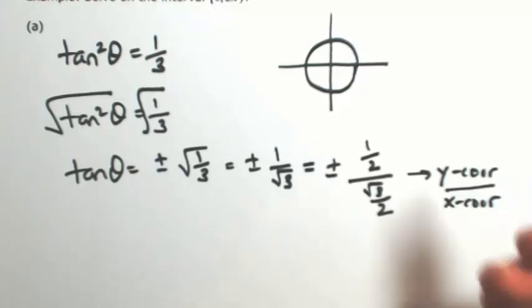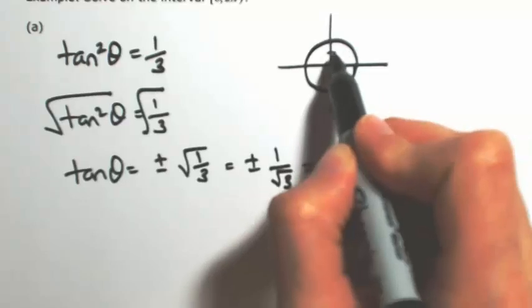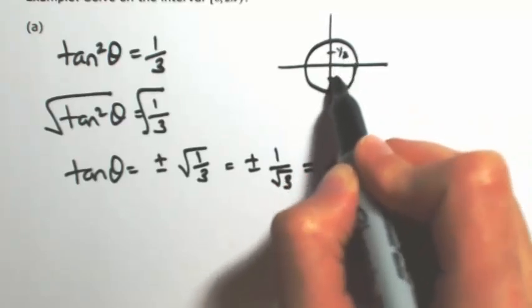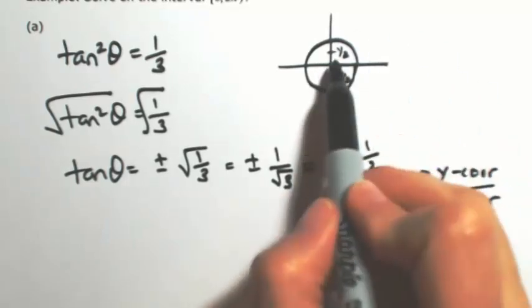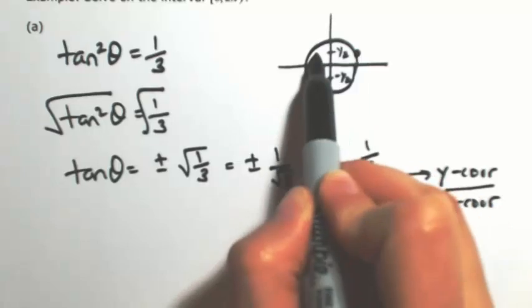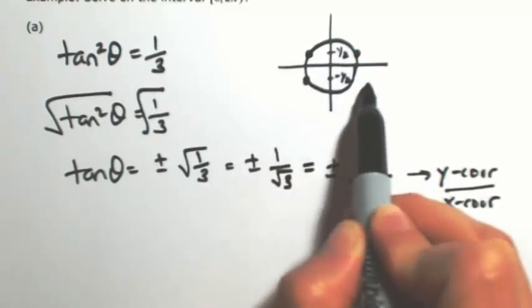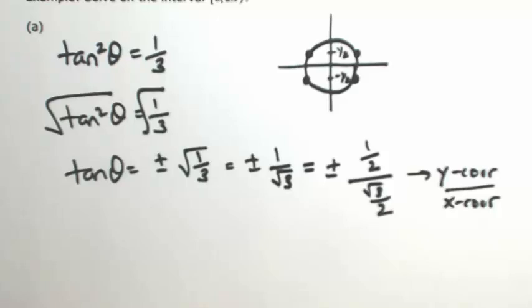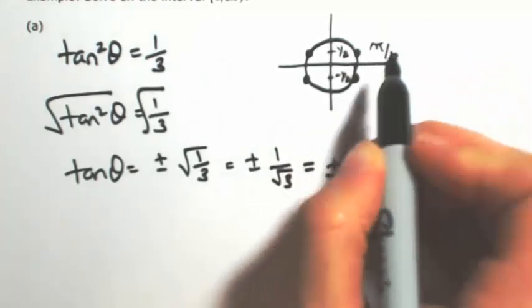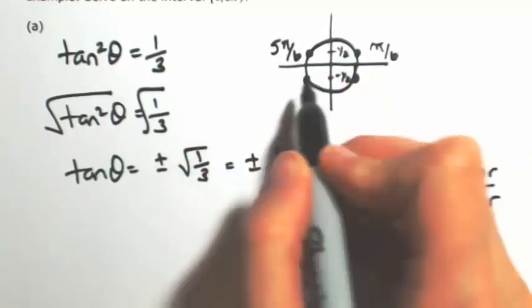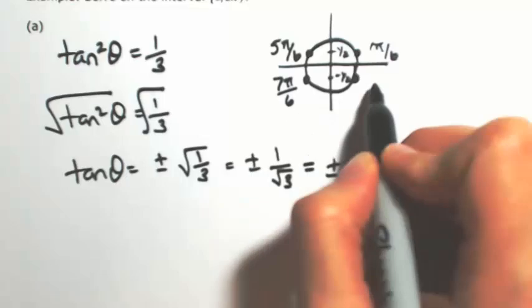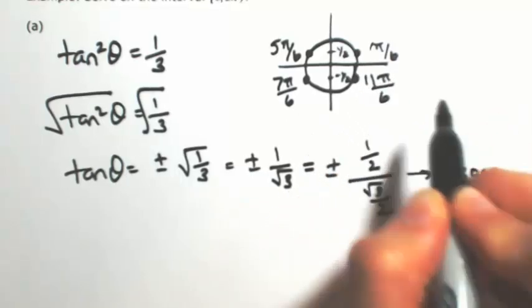So I'm looking for where the y coordinate is 1 half, or negative 1 half. And with that, the x coordinate will also be the square root of 3 over 2. So where the y is 1 half, or negative 1 half happens at four places. And these are all at our pi over 6's. So pi over 6 in the first quadrant, 5 pi over 6 in the second quadrant, 7 pi over 6, and 11 pi over 6.